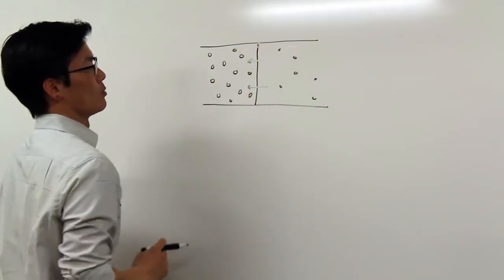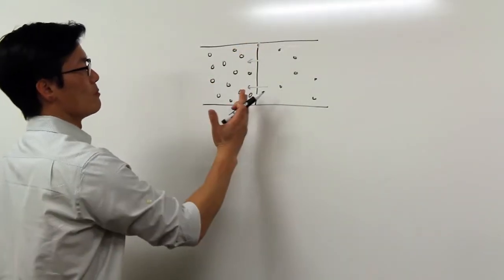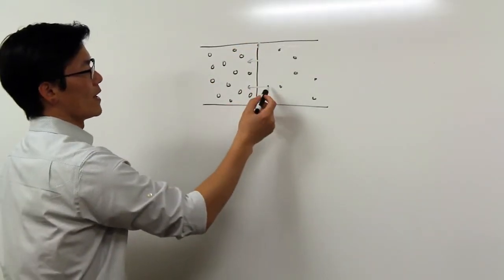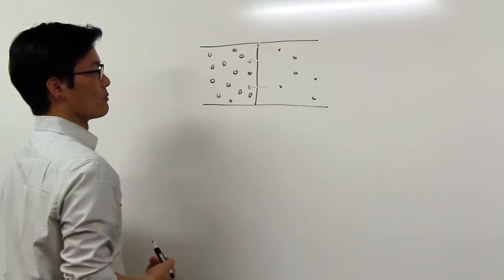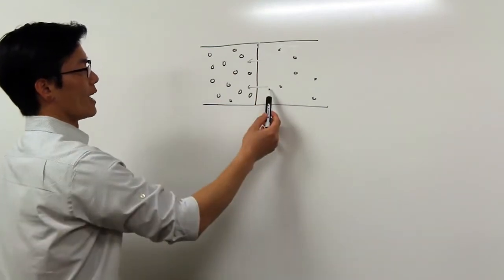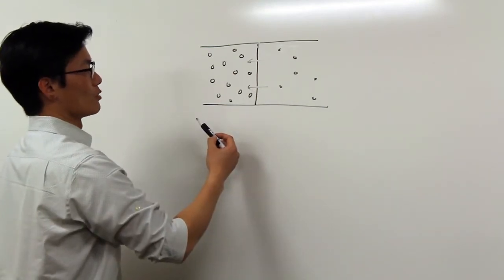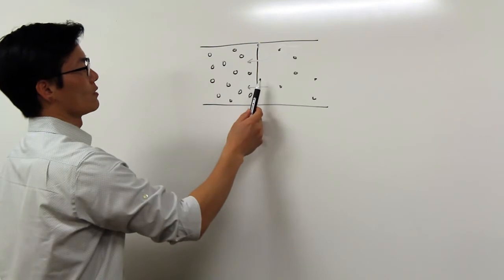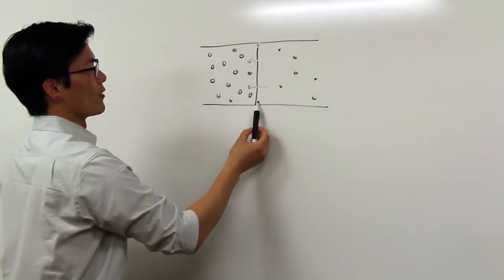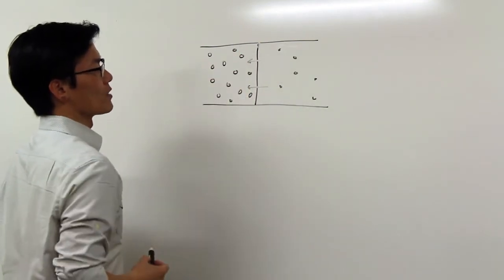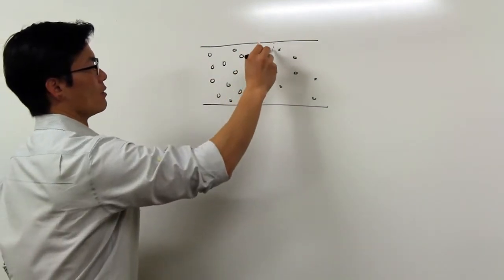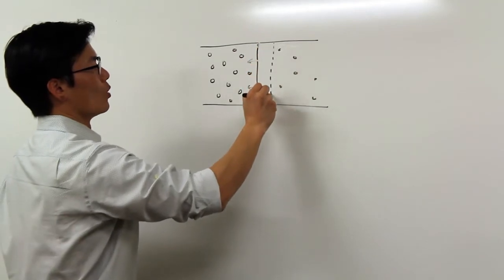It turns out that the physical process of osmosis can generate water movement across cell boundaries. Imagine that two compartments with different concentrations of proteins and ions are separated by a membrane. Water will flow from the low solute region to the high solute region driven by an entropic force. This will lead to swelling of the high solute region and a movement of the membrane forward.